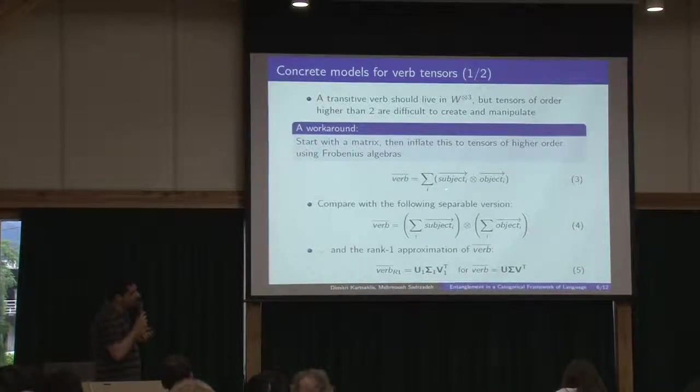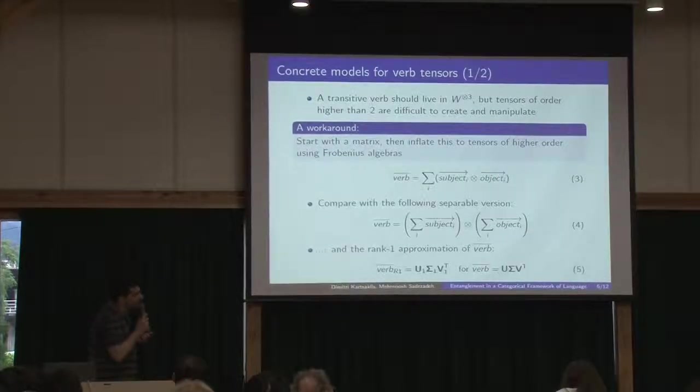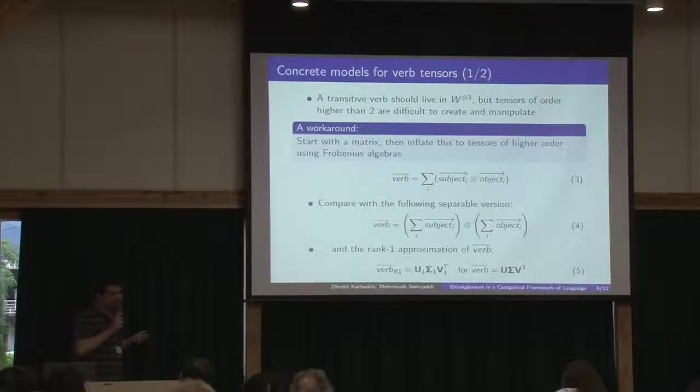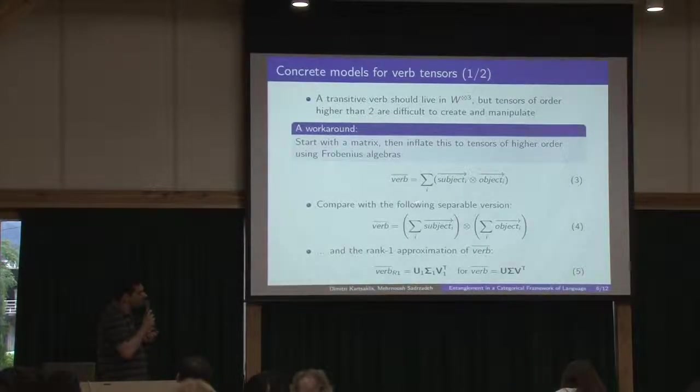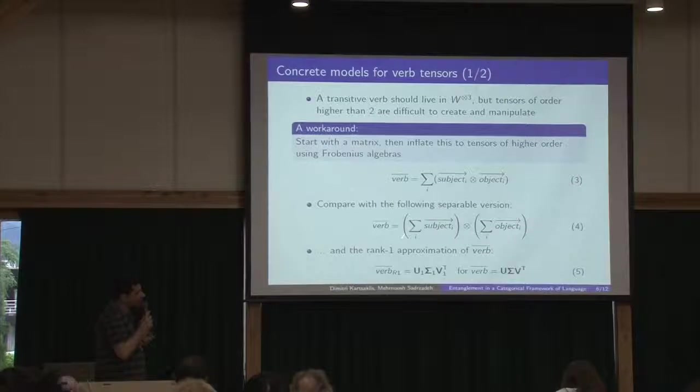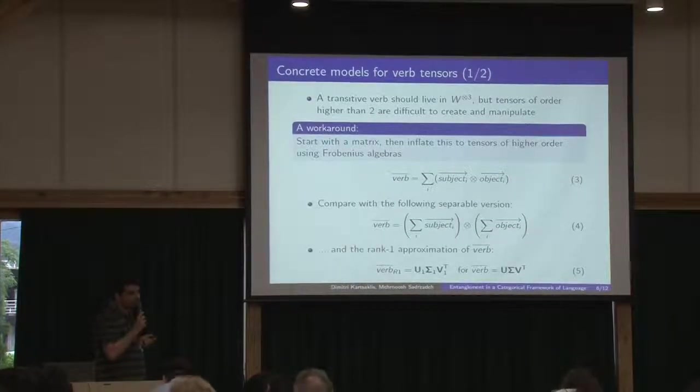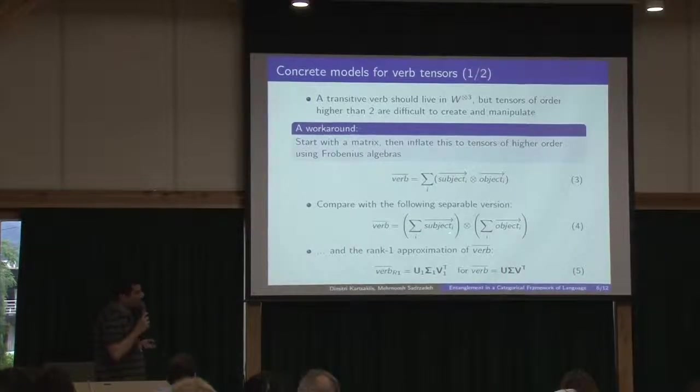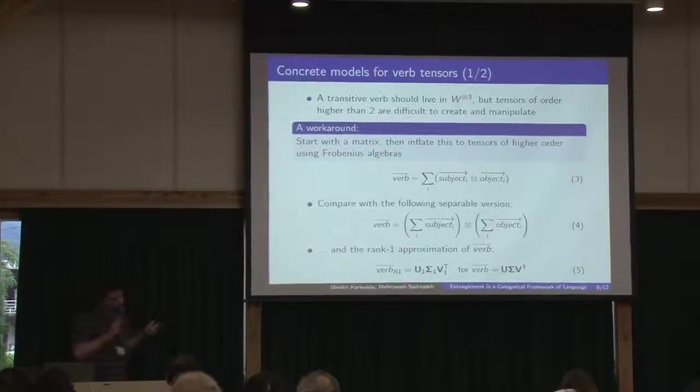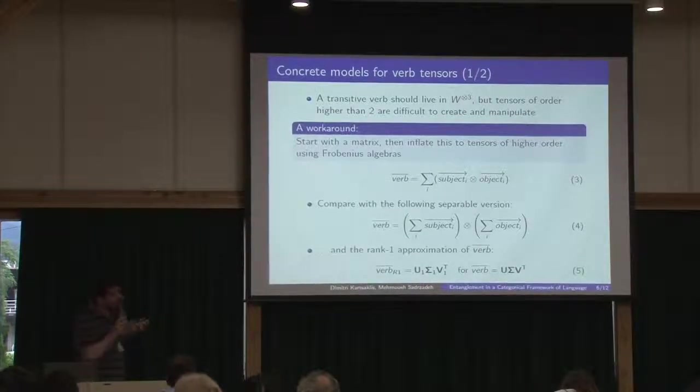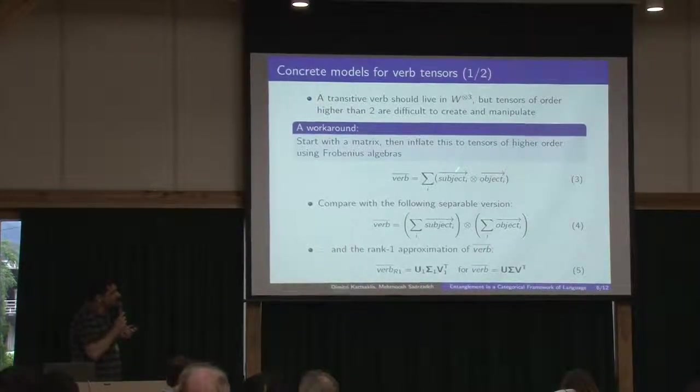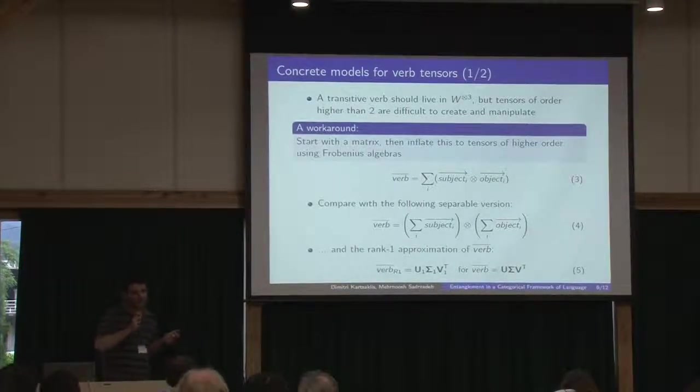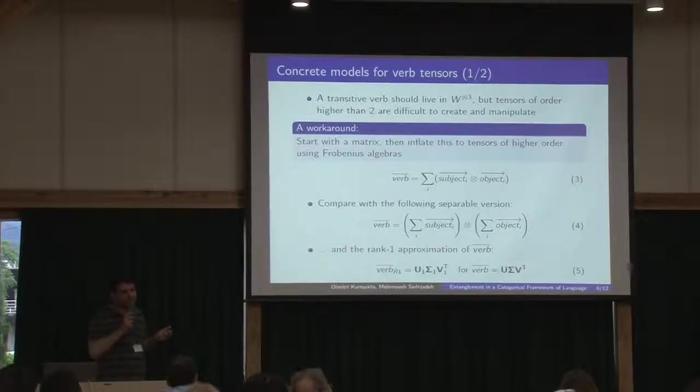This thing here should naturally result in an entangled tensor. At least assuming some level of linear independence between our vectors. Compare this with this model here, which is obviously separable. First with sum and then with tensor. So the purpose of this work was to test the level of entanglement in these matrices, and how this level affects actually the results in some practical situations.